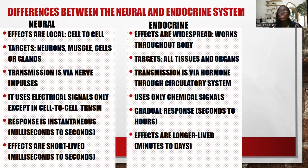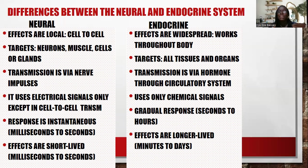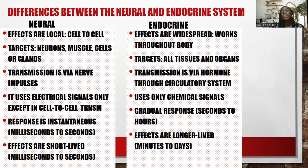The neural system uses electrical signals, and in some cell-to-cell transmission it uses electrochemical signals, but the endocrine system uses entirely chemical signals. The response in the neural system is instantaneous — milliseconds to seconds. For example, blinking an eye is the neural system working, but if you need to run away or stand and fight, the endocrine system is your man. The effects of the neural system are short-lived, while effects of the endocrine system are longer-lasting, taking minutes to days.